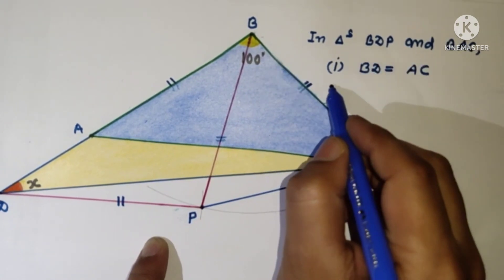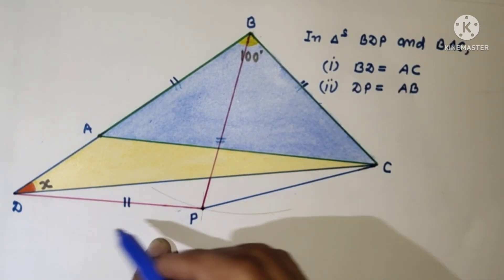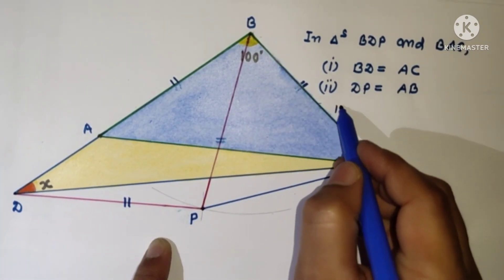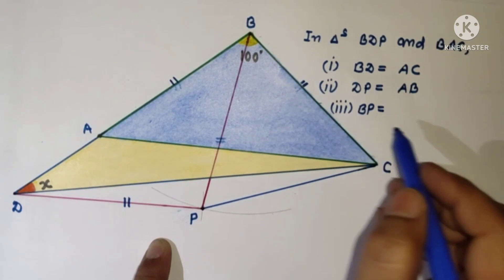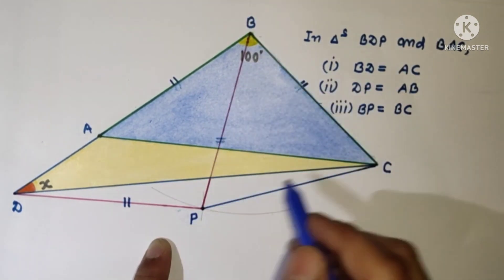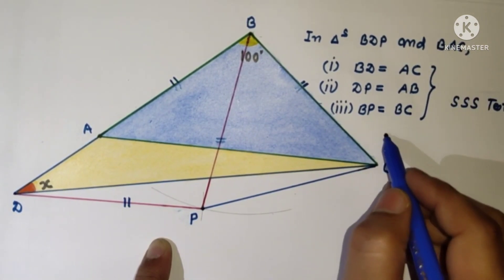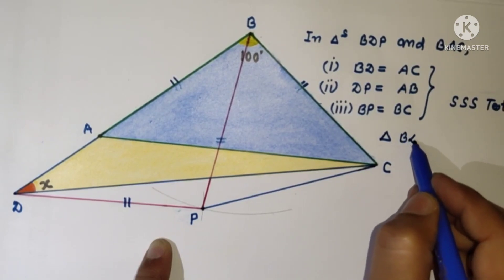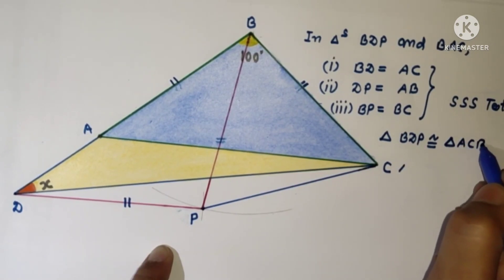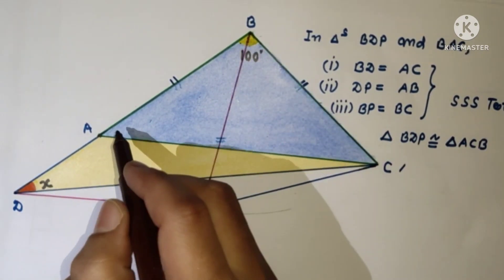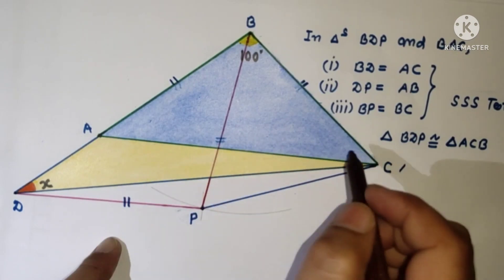In triangles BDP and BAC: first, BD is equal to AC; second, DP is equal to AB by construction; third, BP is equal to BC by construction. By the SSS test of congruency, triangle BDP is congruent to triangle ACB.